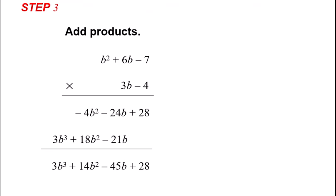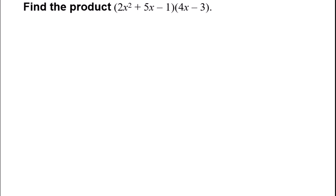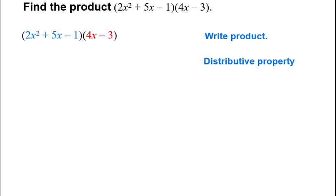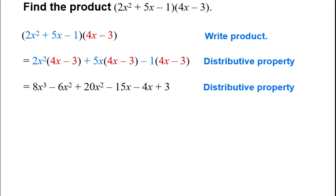So you've now seen a couple of different ways — horizontal method, box method, and vertical method. Now find the product horizontally. Specifically, they want you to use your distribution in a horizontal method. Write the product using your distributive property — you are multiplying every single term by that 4x minus 3, doing each of those separately, and then combining your like terms. You get 8x cubed plus 14x squared minus 19x plus 3.